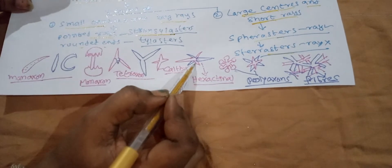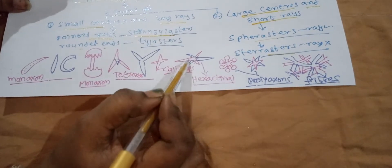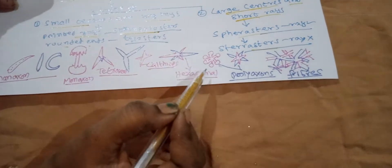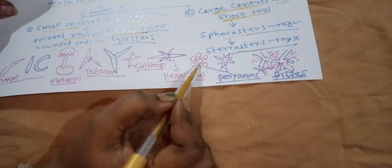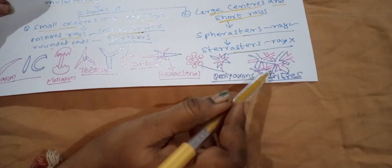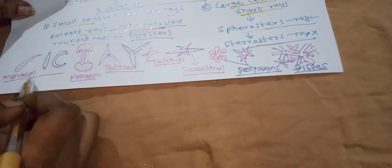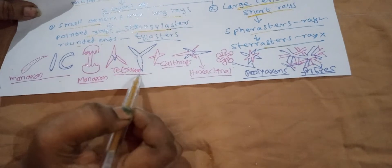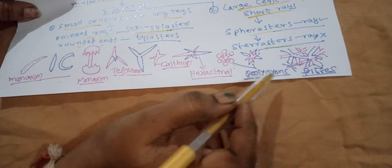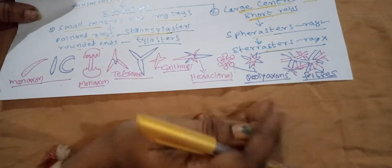Hexactin with six rays is shown. Next, polyaxon with many rays. Finally, spongin fibers — these are totally different from monaxon, triaxon, tetraxon, and hexactin spicules — representing spongin fibers.